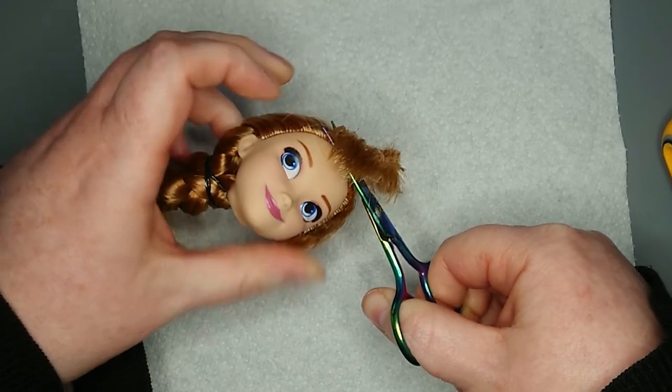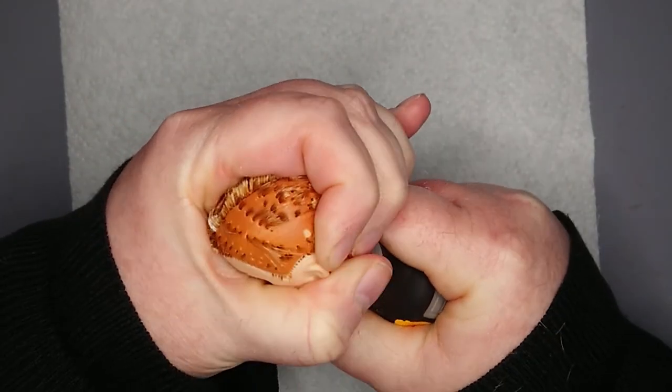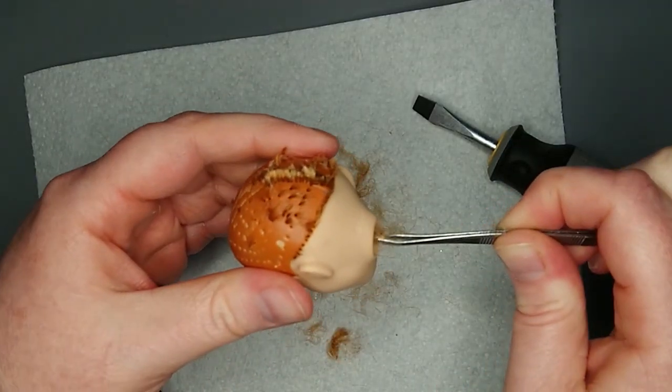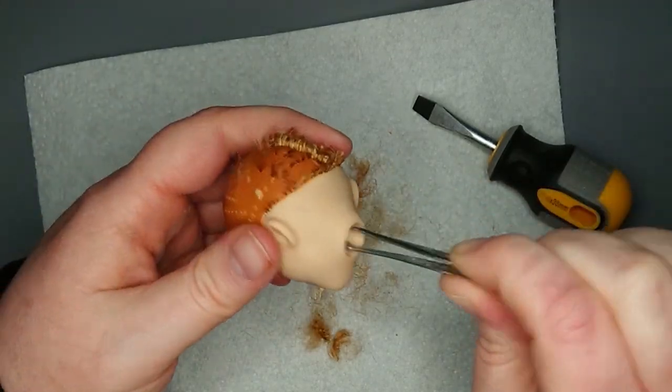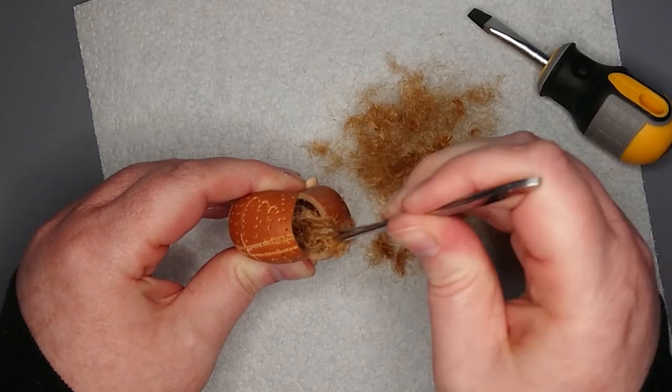I cut the hair off as close as possible to the scalp, and use a flat head screwdriver to scrape away the remaining hair plugs. I tried removing it all with tweezers through the neck hole, but it wasn't super effective, so I ended up making a slice in the back of her head and removing the rest of the hair that way.